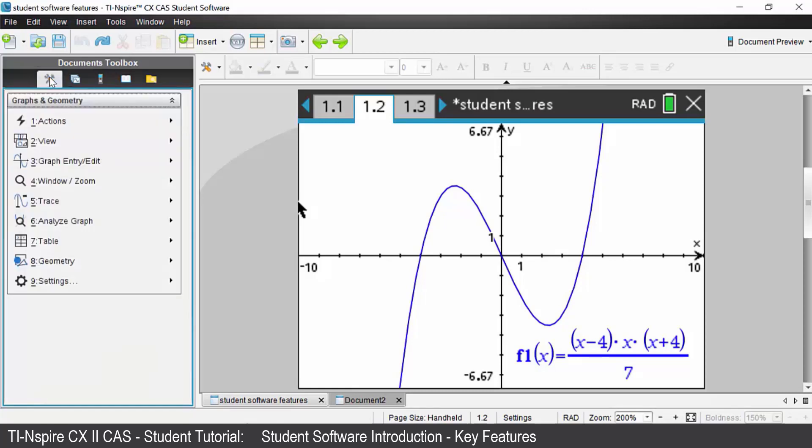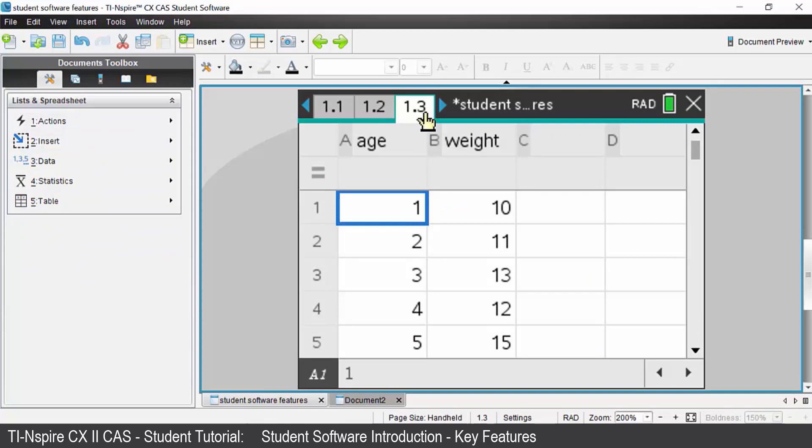Your first icon will give you all of the menu items associated with the current application you have opened. So I have a graphs application open at the moment. These are the menu items associated with the graphs application. If I was to go to my lists and spreadsheets page or application the menu items change.